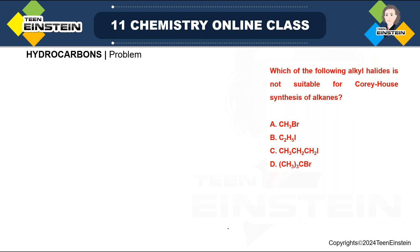Among those restrictions, one is that there should not be high steric hindrance, especially at the carbon to which the halogen is directly attached. So for option A, there is no steric hindrance. For C2H5I, that is CH3-CH2-I, the carbon also has no steric hindrance. Options A, B, and C are all basically linear chains with no branching at the carbon bearing the halogen. But if you look at the last option, there is steric hindrance at the carbon directly attached to the halogen.